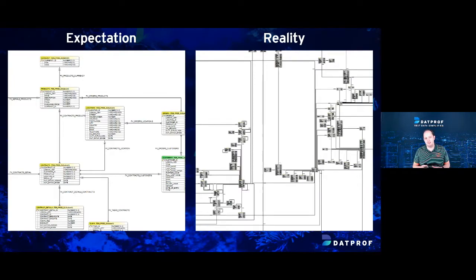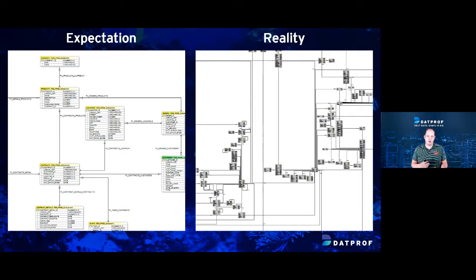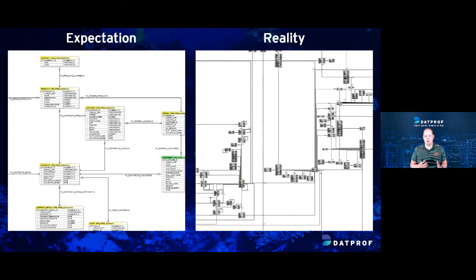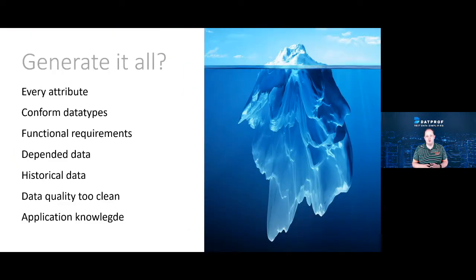When choosing a test data strategy, underestimating the complexity of your test data is one of the biggest reasons a synthetic data generation project will fail. When thinking about generating synthetic data, you probably think of some customers, some contracts, some orders — a really simple data model with some tables and relationships. But reality is far more complex. What's shown here is only maybe 10 percent of a real data model of an ERP system that we subset and mask, and when you have to generate all of that data, it becomes really complex.